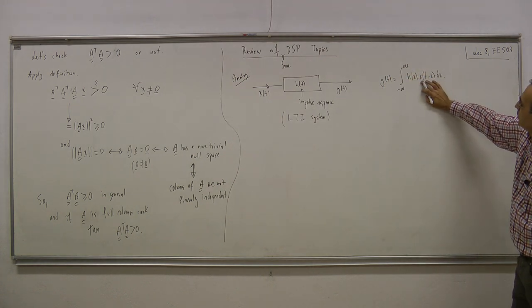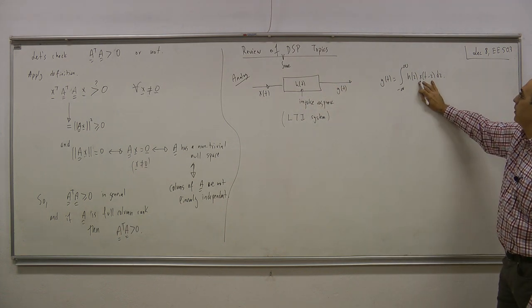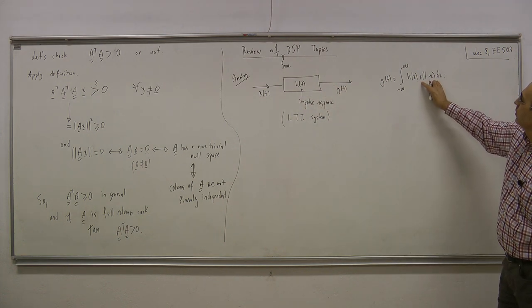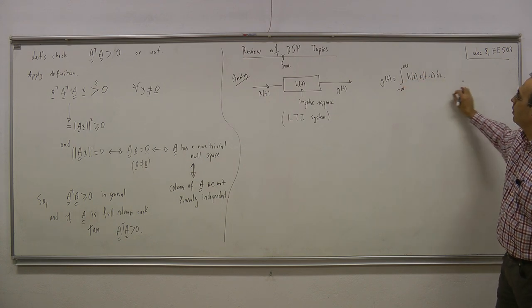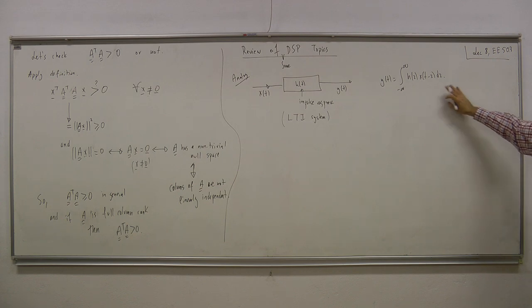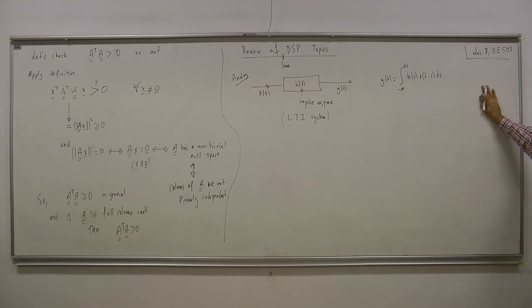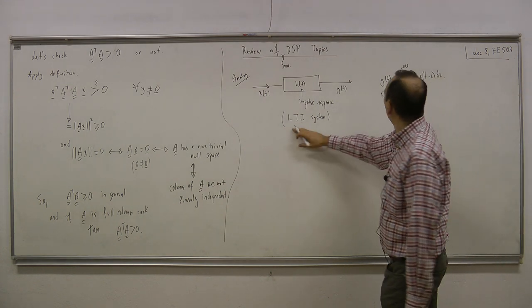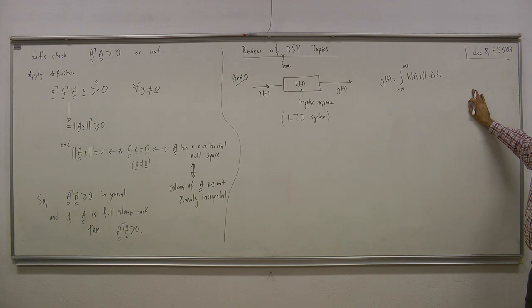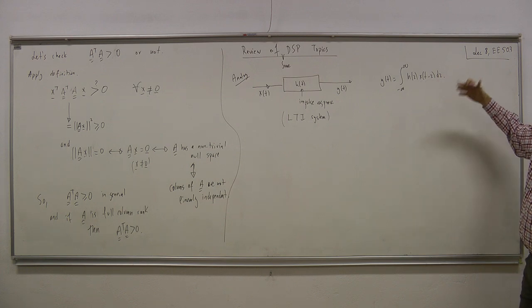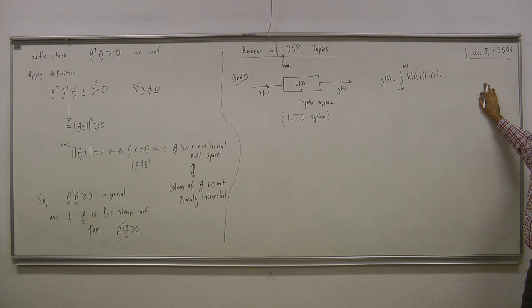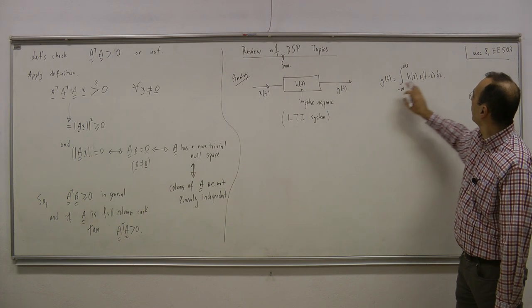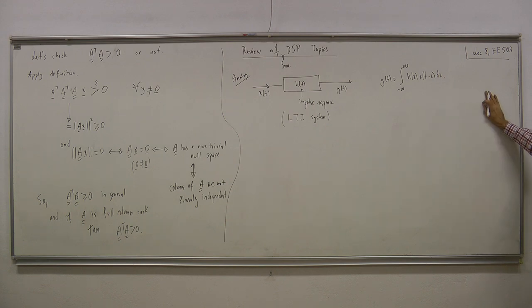When I have h(t), I am always considering a linear time-invariant (LTI) system. Linearity is obvious from the convolution integral — superposition and homogeneity are immediately satisfied. Time invariance means that if you apply the input at a later time, the response is only shifted by that time. Any LTI system can be represented by its impulse response — linear time invariance and impulse representation are equivalent.